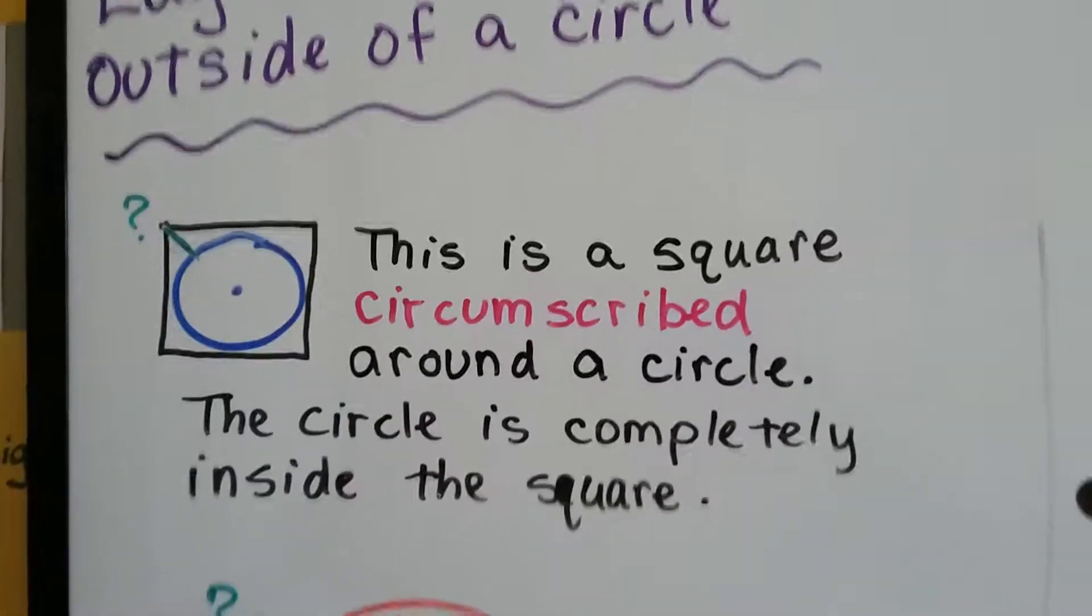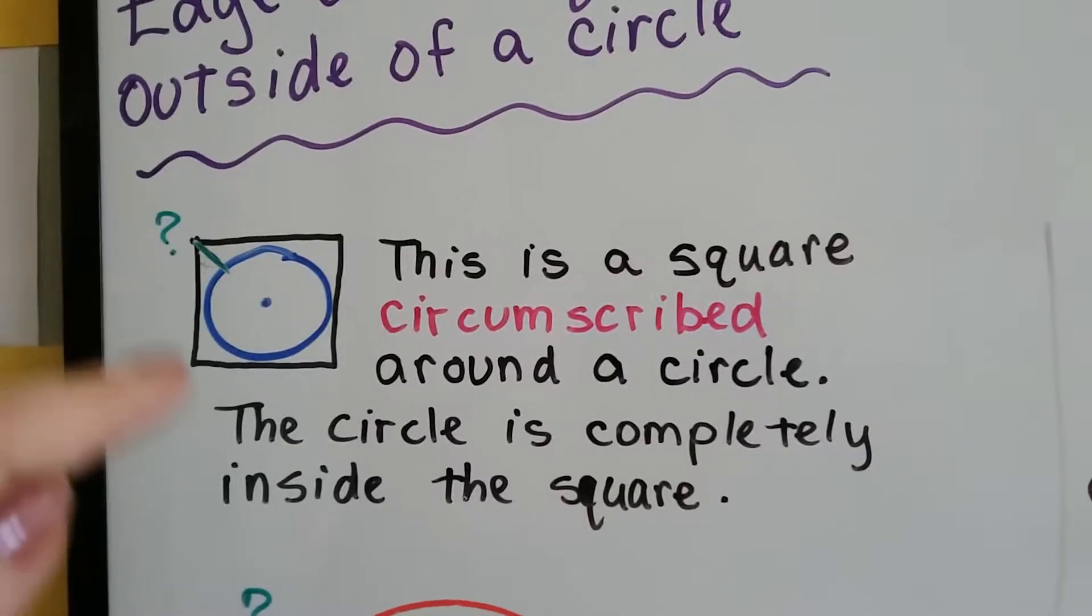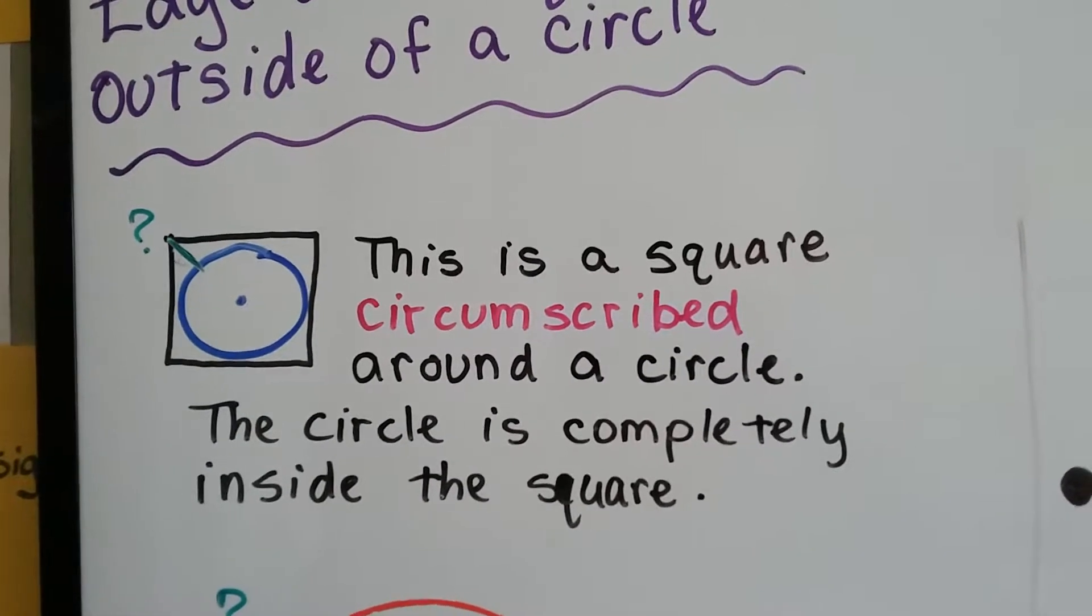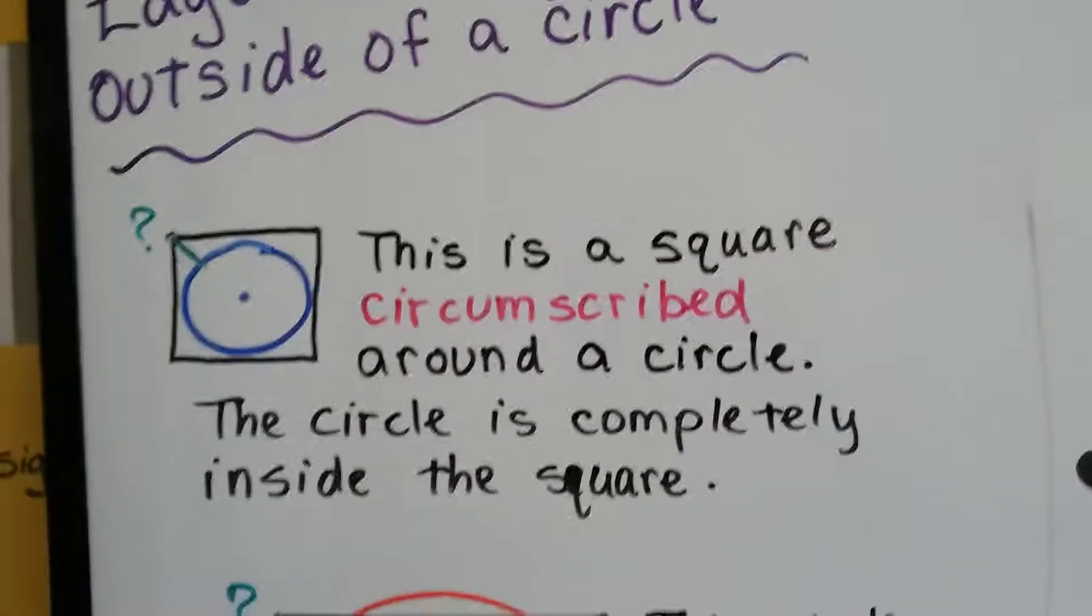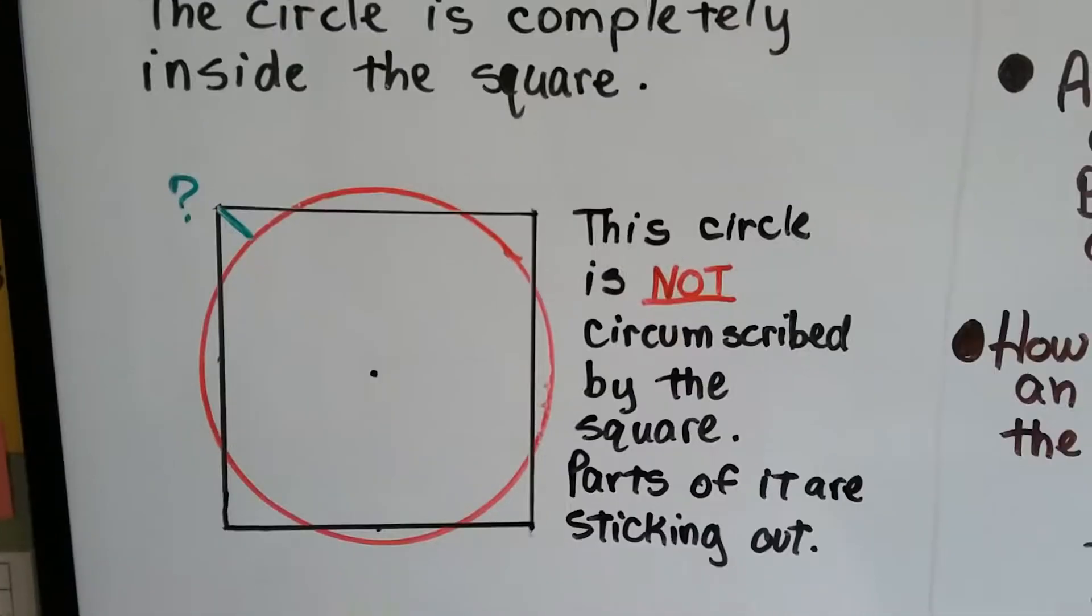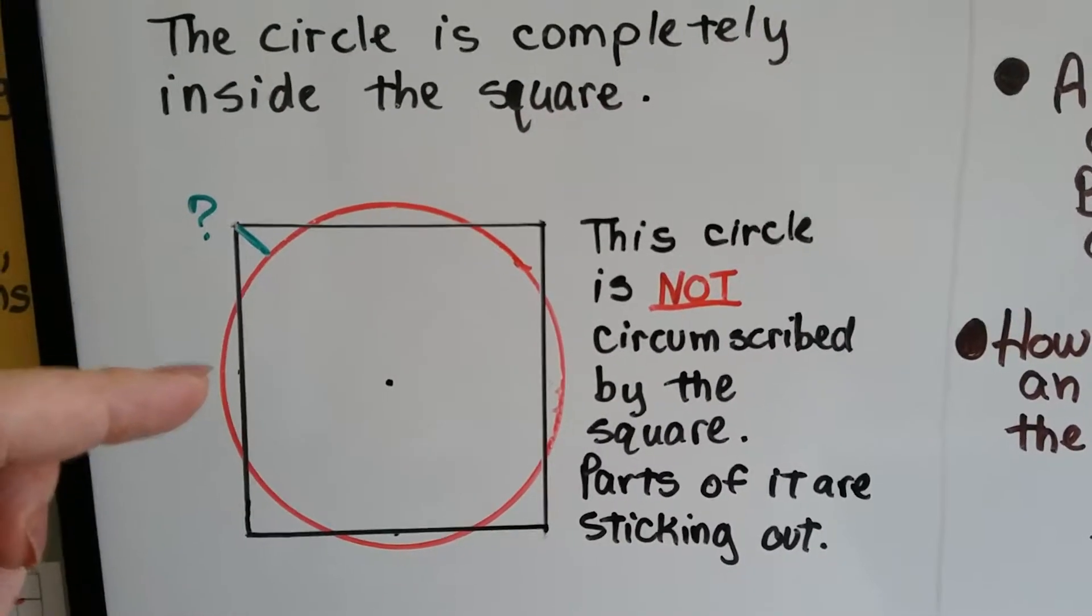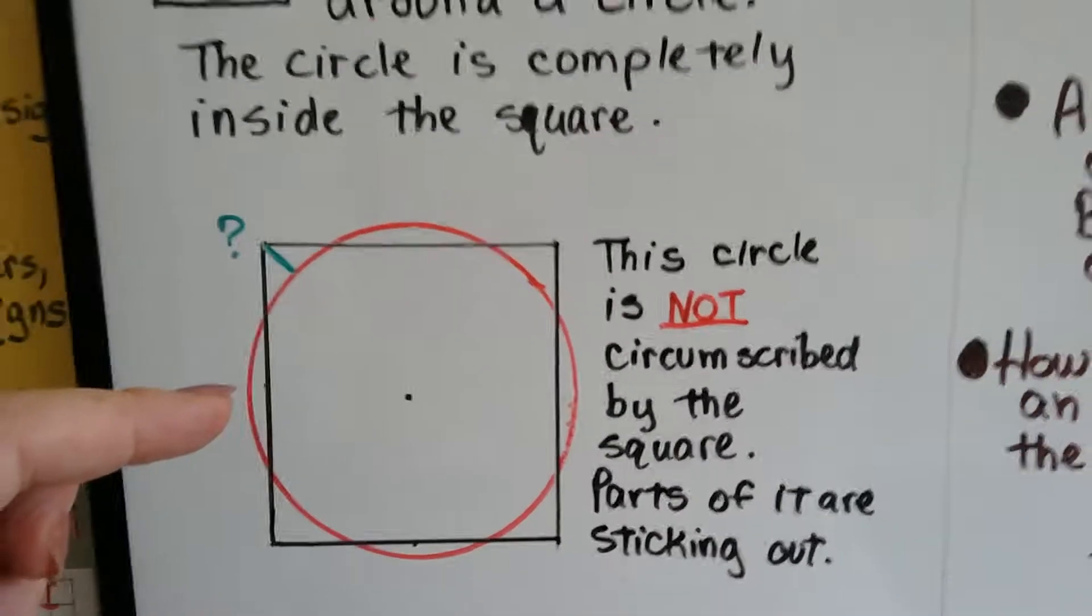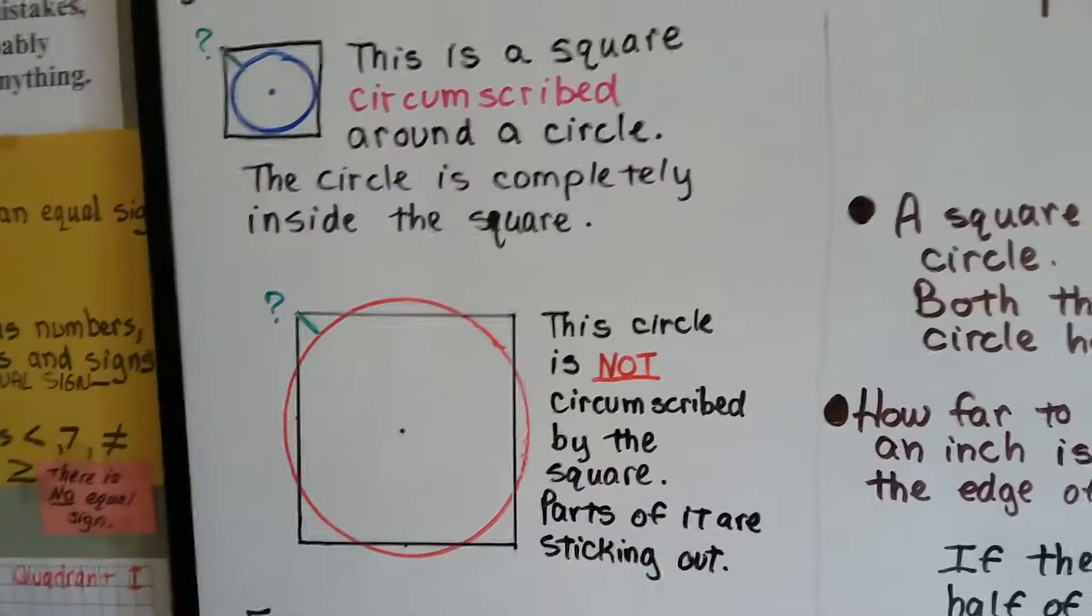So take a look at this drawing. This is a square circumscribed around a circle. The circle's completely inside the square. See that? So it's circumscribed. This circle is not circumscribed by the square, because parts of it are sticking out. In order for it to be circumscribed, it needs to be completely inside that square.